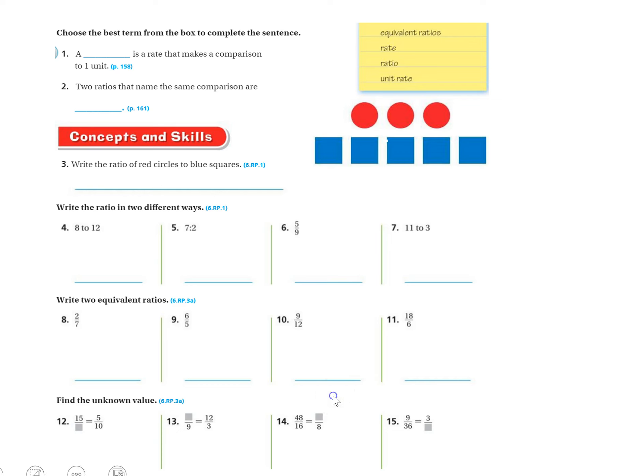Number one, a blank is a rate that makes a comparison to one unit. Go to page 158 and see which one of these vocabulary words they're talking about when you're comparing to one unit.